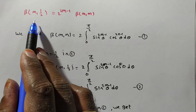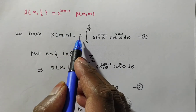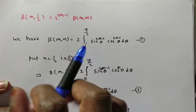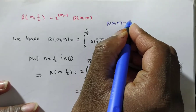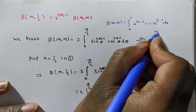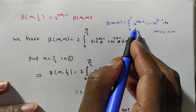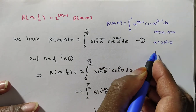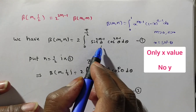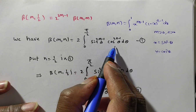Now observe — what is the definition? Both sides involve the beta function only. Write down the definition of the beta function: beta of m comma n is equal to 2 times the integral from 0 to pi/2 of sin to the power 2m minus 1 theta, cos to the power 2n minus 1 theta, d theta. Generally, in Cartesian form, beta of m comma n equals the integral from 0 to 1 of x to the power m minus 1 times (1 minus x) to the power n minus 1 dx, where m greater than 0 and n greater than 0, making the integral convergent.